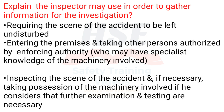Explain the methods an inspector may use in order to gather information for an investigation: requiring the scene of the accident to be left undisturbed; entering the premises and taking other persons authorized by the enforcing authority, who may have specialist knowledge of the machinery involved; inspecting the scene of the accident and, if necessary, taking possession of the machinery involved if further examination and testing are considered necessary.